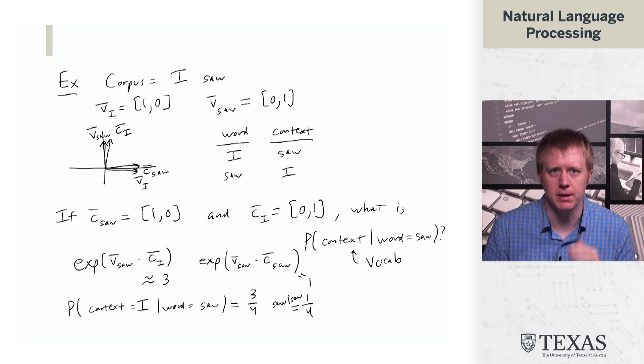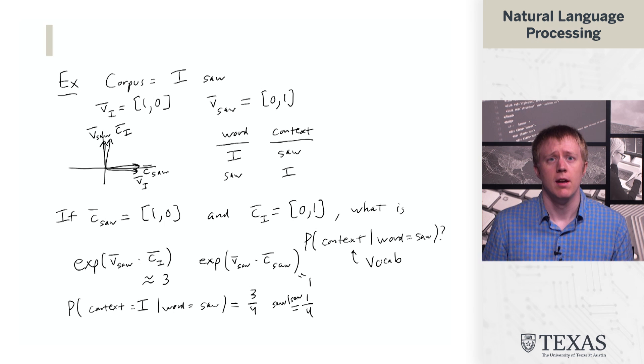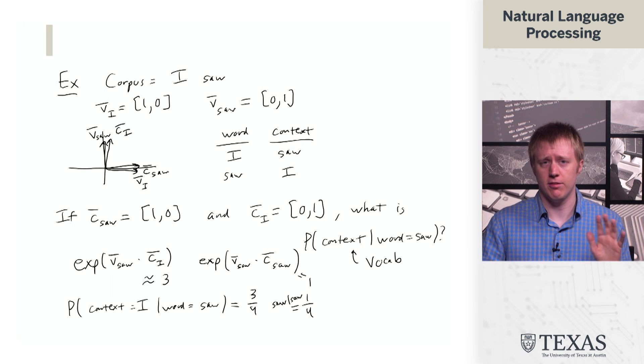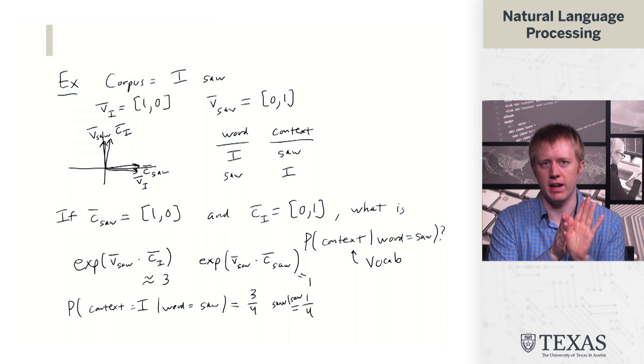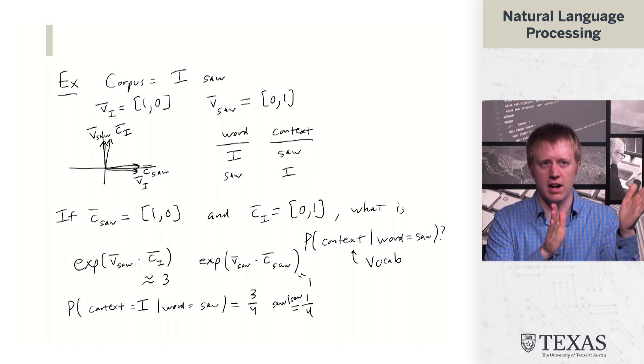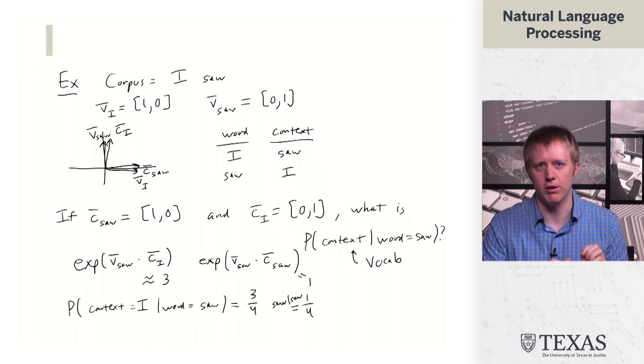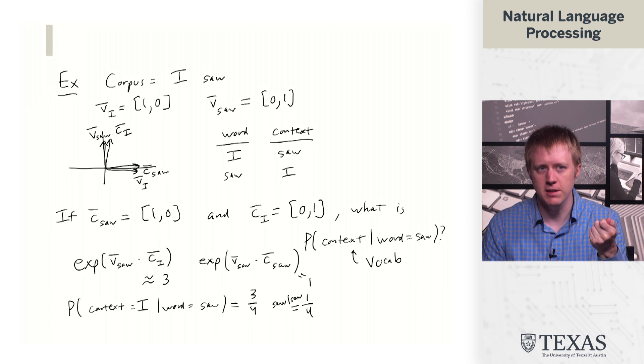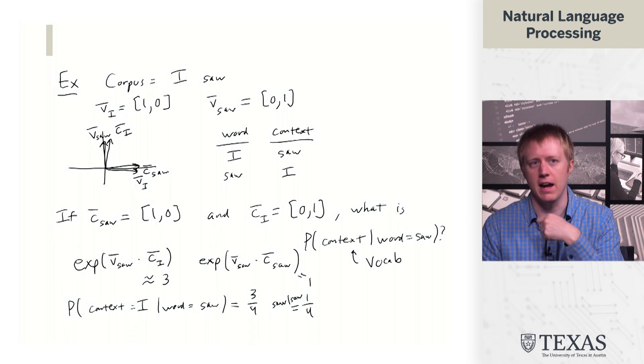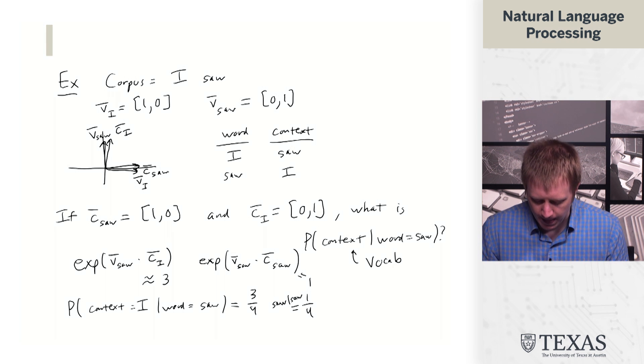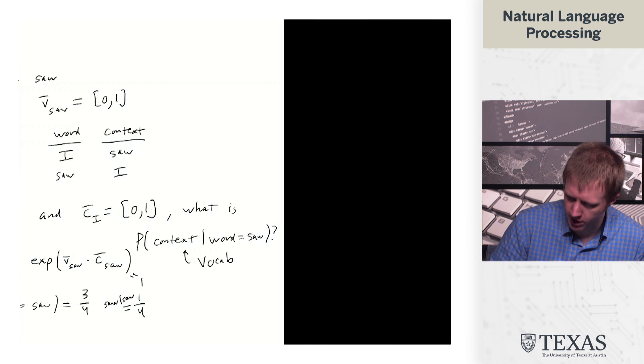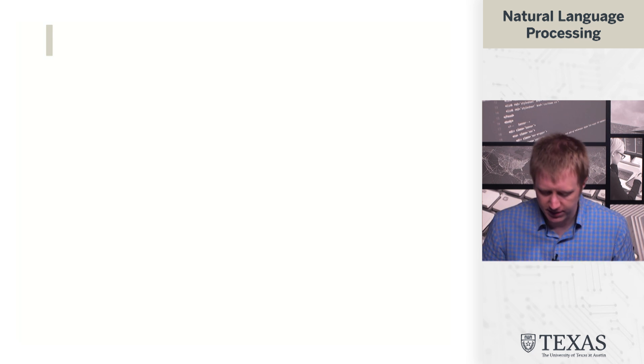The other thing it shows you is this idea that the word space v and the context space v are not really like the same. In fact, we kind of need them in this case to be like rotations of each other so that like the words can be close to their contexts. But they're not necessarily close to like those word vectors. Like v saw and CI need to be close to each other but v saw and VI are typically not. Okay, so that gives you a kind of sense of this computation.